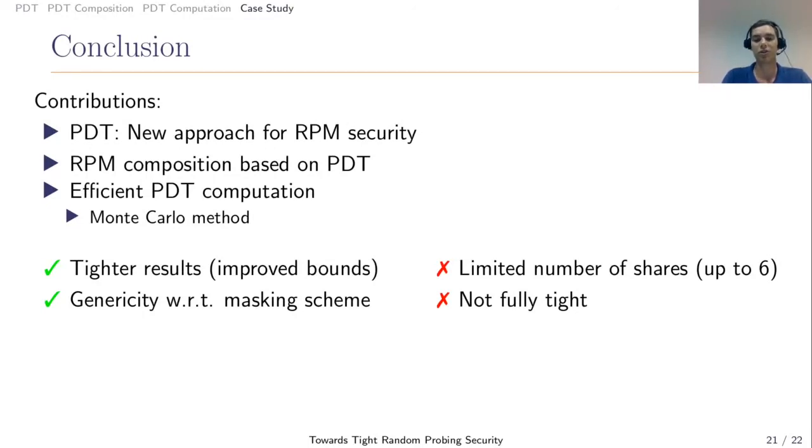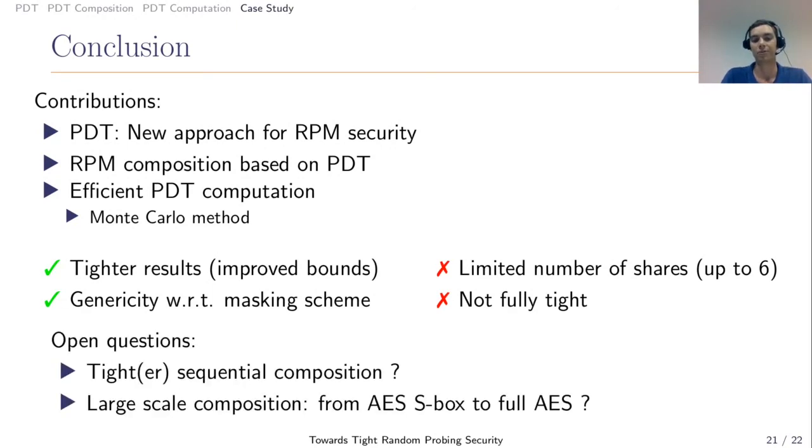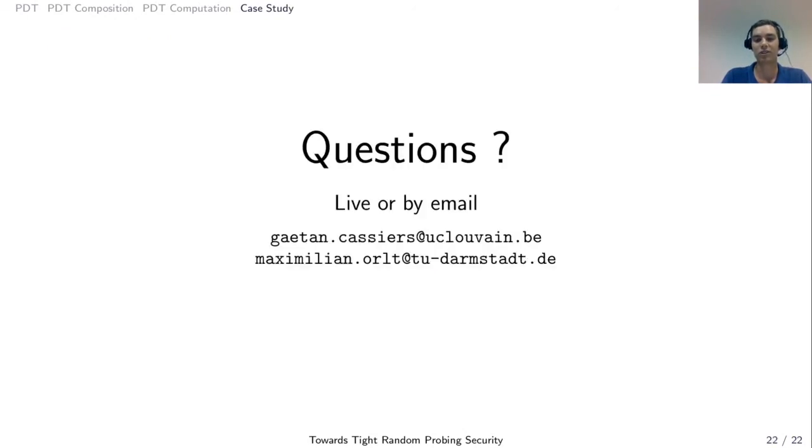However, there are limitations to this approach. The first one is still the complexity, computational complexity of this evaluation. When you go to two large gadgets, even our Monte Carlo approach is limited, and it's not able to get tight enough results to improve the state-of-the-art. And also, it is not fully tight. We have some untightness in the evaluation of the PDTs. So this is the first natural improvement track is to try to improve still this tightness. And also, these composition theorems, they are quite nice when you compute on, for instance, a nest box size, but we are still not able to perform these matrix products for very large size gadgets such as a full AES. Thank you for listening to this video and we'll be very happy to take and answer your questions either live at the conference or by email.